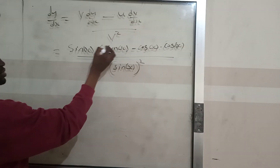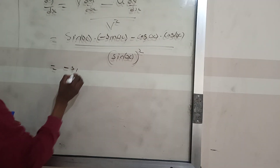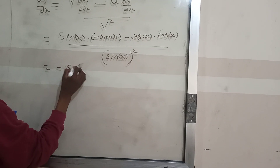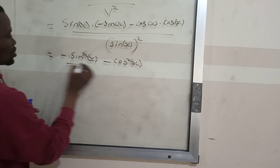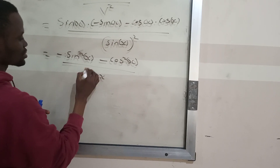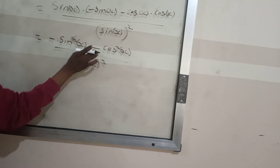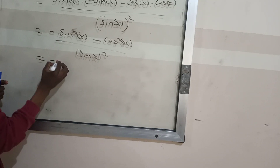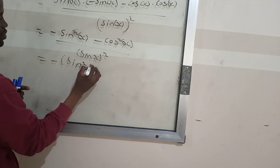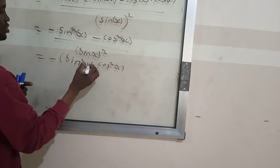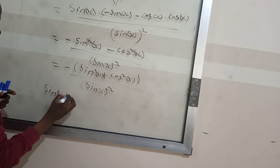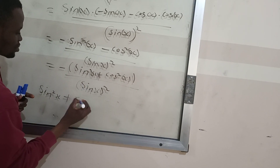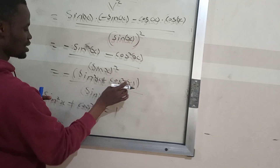Working through this: sine x times negative sine x gives minus sine squared x, minus cos x times cos x gives minus cos squared x. So we have minus sine squared x minus cos squared x, all divided by sine squared x. Factoring out negative one, we get negative of sine squared x plus cos squared x, all divided by sine squared x. Since sine squared x plus cos squared x equals one, the expression in the bracket is one.